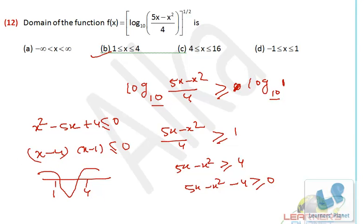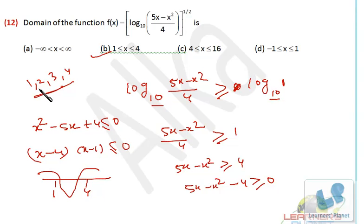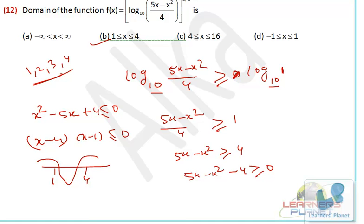Isn't it very easy, friends? In a competitive exam, another way to ask this question is: how many integral values can x take for the function to be defined? Since x lies between 1 and 4 inclusive, the integral values are 1, 2, 3, and 4 — so x can take 4 values. These are the different ways of asking the question: what are the favorable values of x, or how many favorable integral values of x? In all cases you need to find the domain of the function. We'll take more problems in the next session. Do practice with all the problems. I'll see you in the next session. Bye-bye.